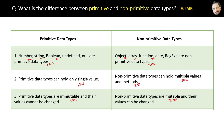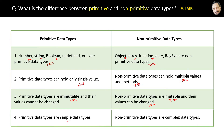The last difference is that primitive data types are simple data types, whereas non-primitive data types are called complex data types — because they can hold a list of values, single values, functions, arrays, anything. That's what makes them complex. Now you are not going to forget these differences between them ever.